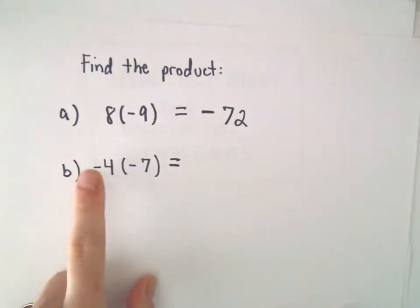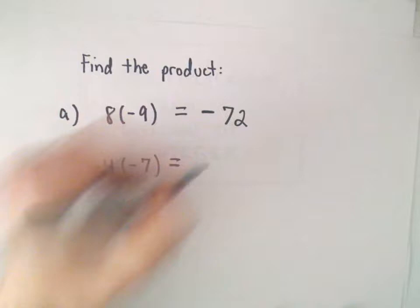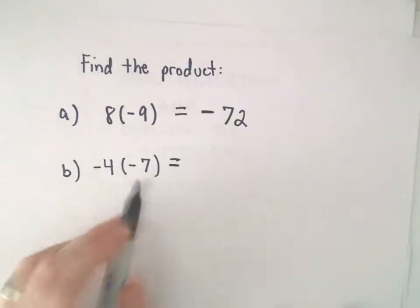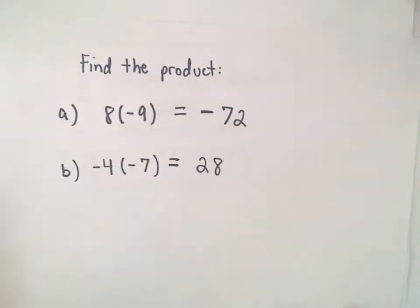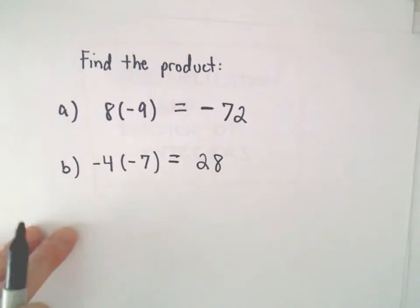If you have two negatives, a negative times a negative, that always gives you a positive. So, 4 times 7 is going to give us 28. So, negative 4 times negative 7, that's positive 28.